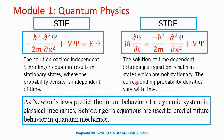Now what is the purpose of these equations? In classical mechanics, Newton's laws are used to predict the future behavior of a dynamic system. In quantum mechanics or wave mechanics, Schrödinger equations will be used to predict the future behavior of the system.